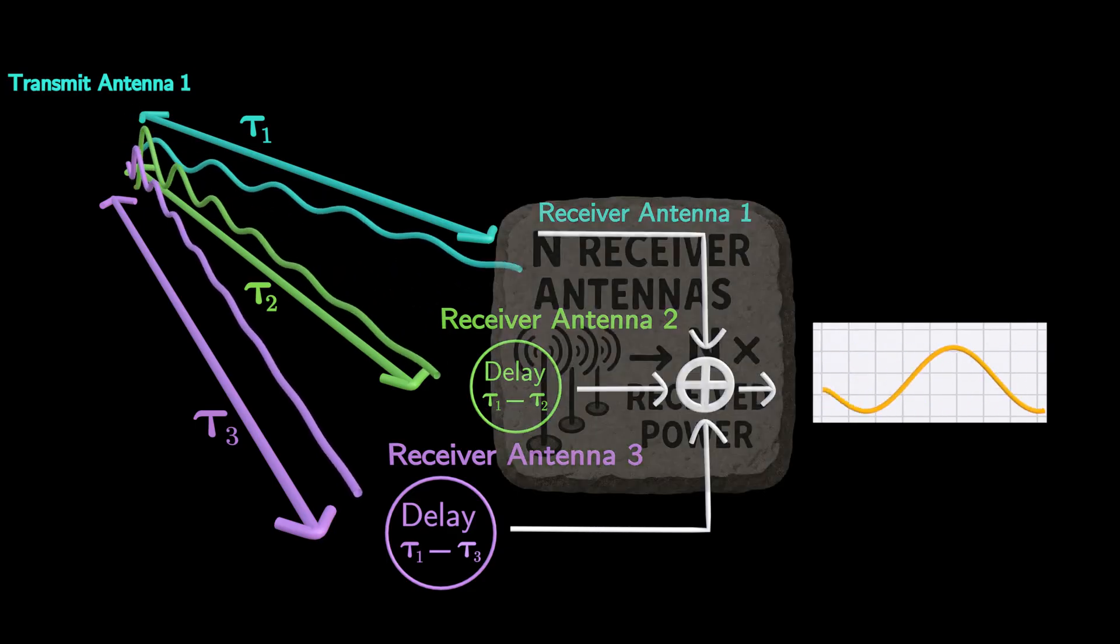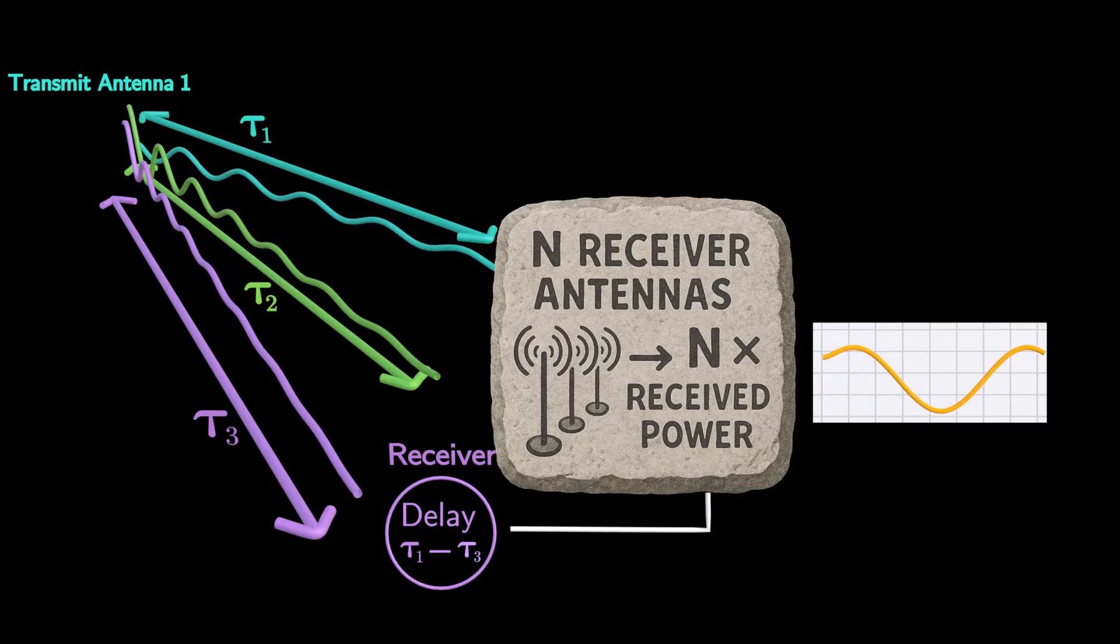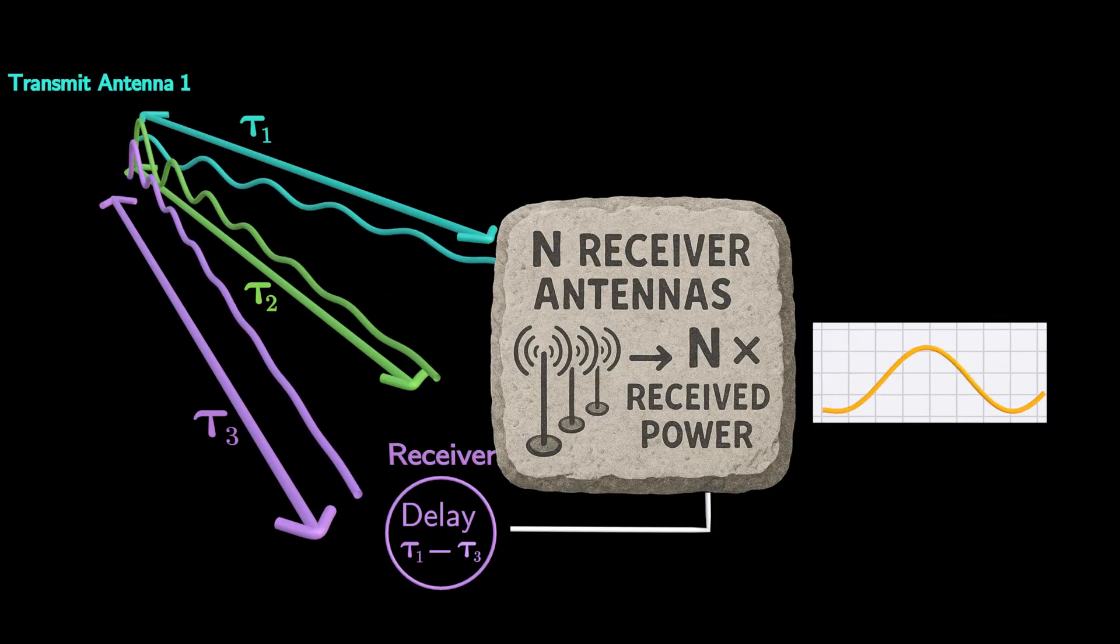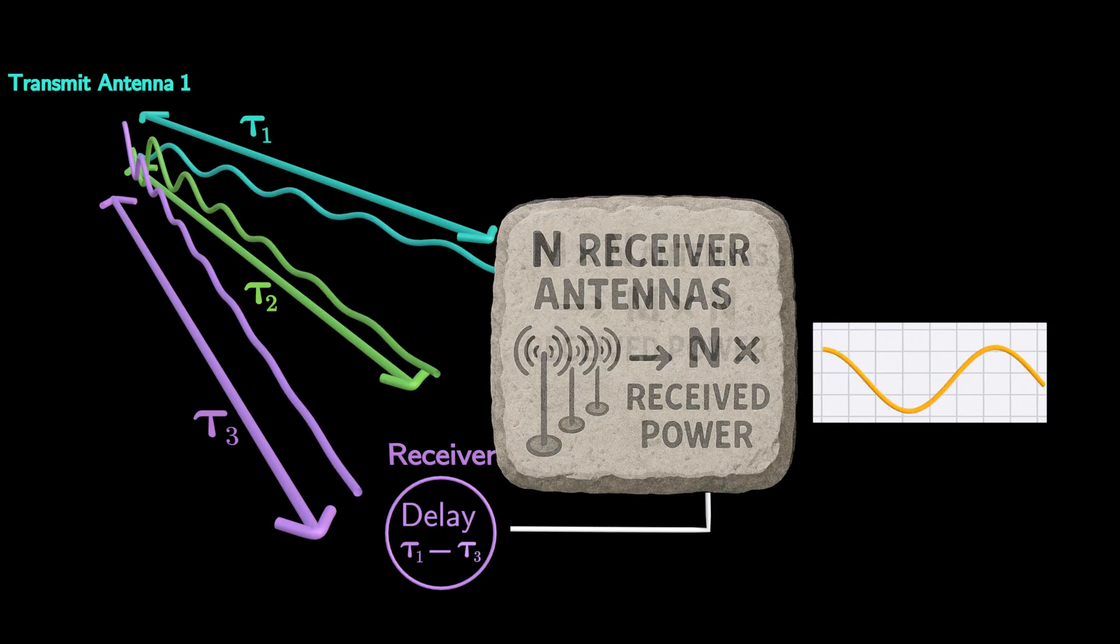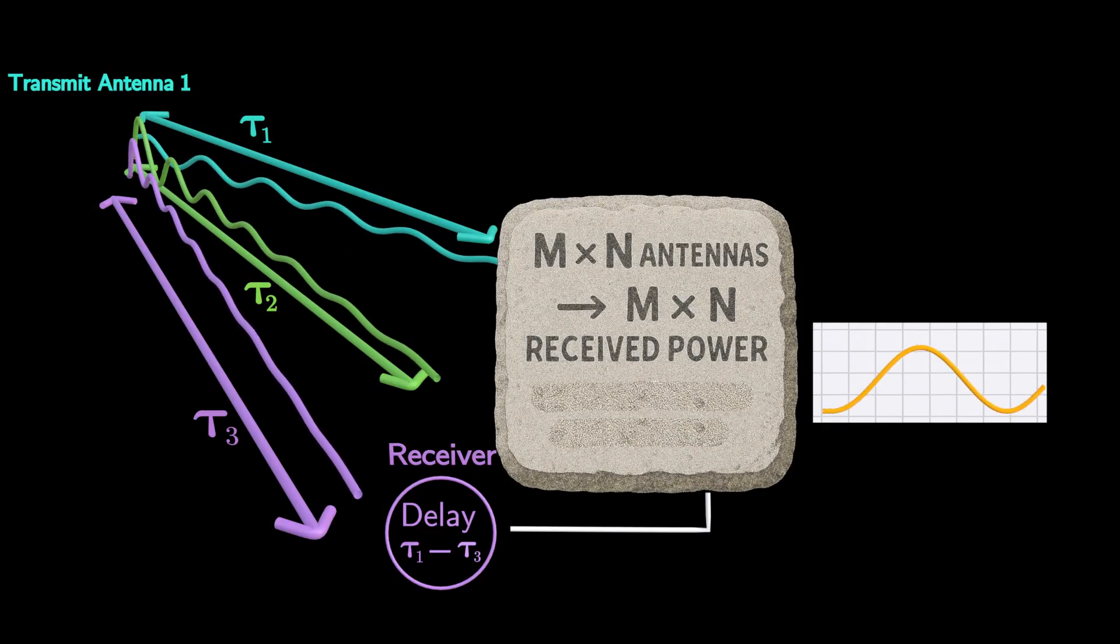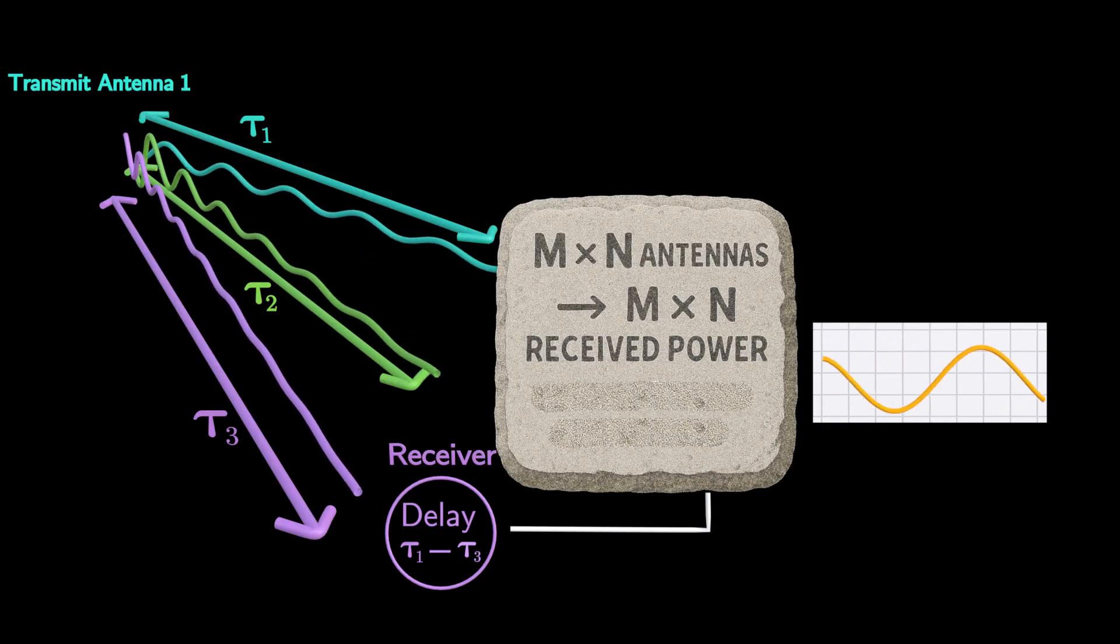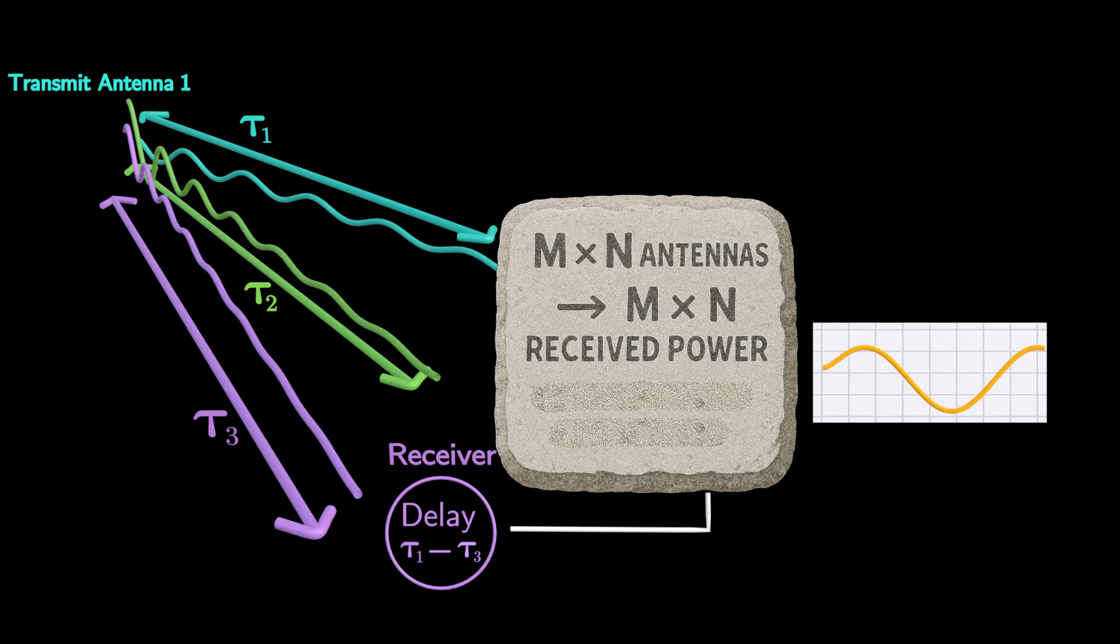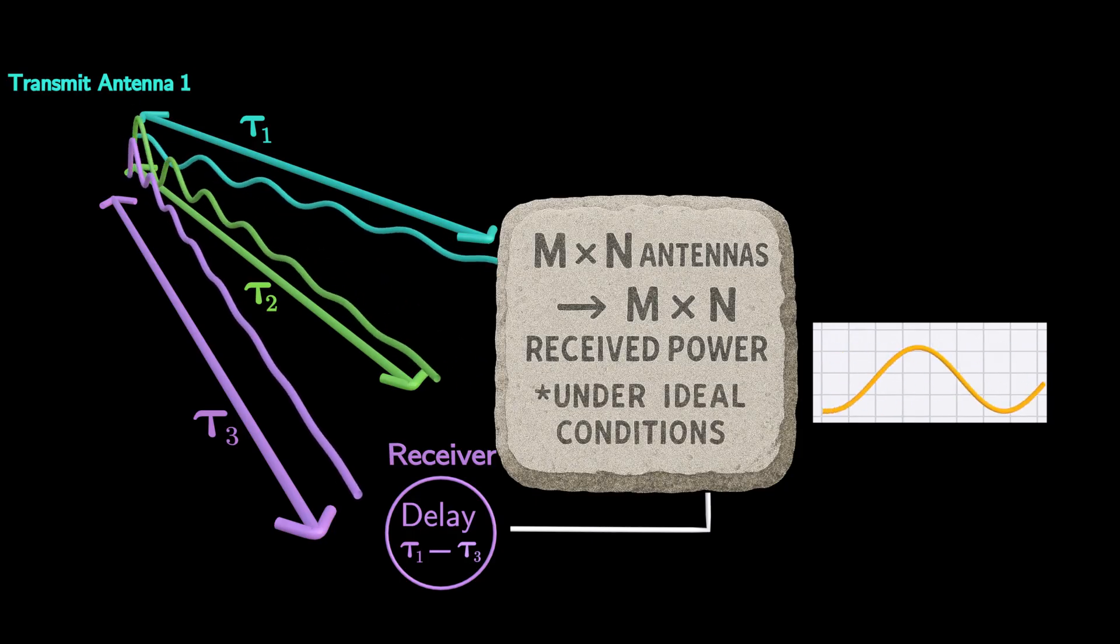Theoretically, N receiver antennas can provide up to N times the received power compared to a single antenna. With M transmit and N receive antennas, the received power can theoretically increase by a factor of M times N under ideal conditions.